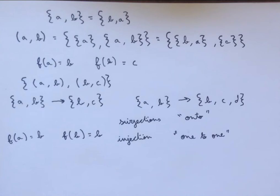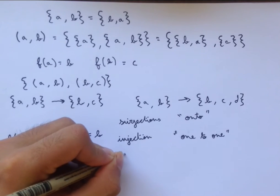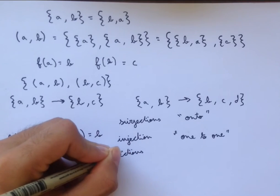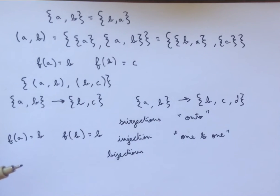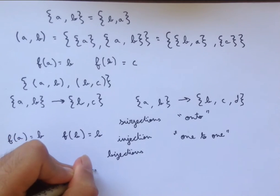And so finally, the last type of function to talk about is a function that has both of these properties. So a function that is both an injection and a surjection. And we call these functions bijections. And in this case, we just combine both of these definitions, and we call them 1 to 1 and onto.